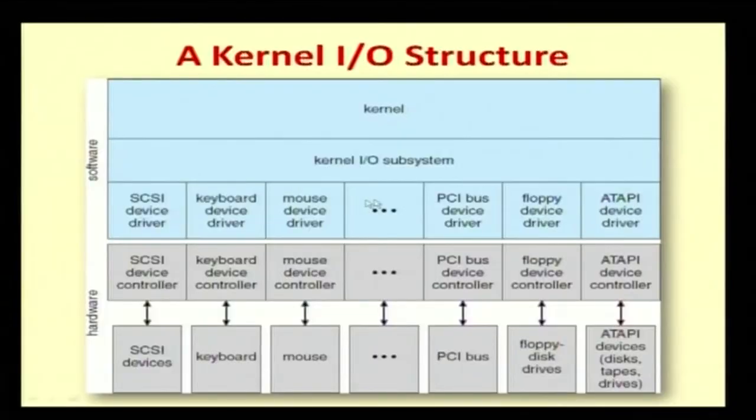Now let us see how this I/O subsystem works. I/O may be a system or a subsystem. A subsystem is part of the main system — the I/O system is part of the entire operating system, which also includes processes and CPU scheduler, hence it is called a subsystem. Let us look at how the I/O subsystem is placed in the kernel and how communication transfers from the I/O device to the operating system. Here is a figure showing the kernel I/O structure — we have a kernel and a kernel I/O subsystem.